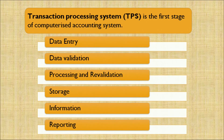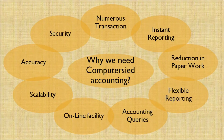There are various types of accounting entries in the system which include data entry, data validation, processing and revalidation, storage, information, and reporting. This is called a transaction processing system, or TPS. What is the need and requirement of computerized accounting? Because there are a large number of transactions, need for instant reporting, reduction in paperwork, flexible reporting, accounting queries, online facility, scalability, accuracy, and securities. All these have been discussed in detail.